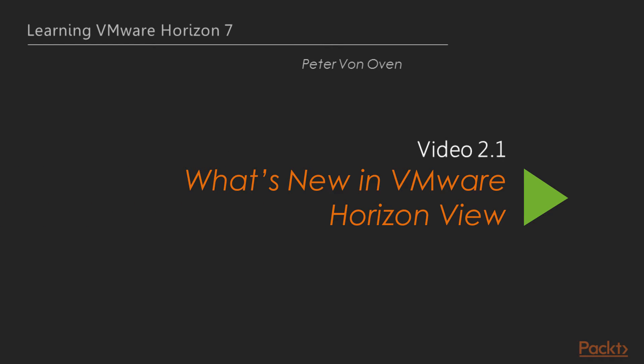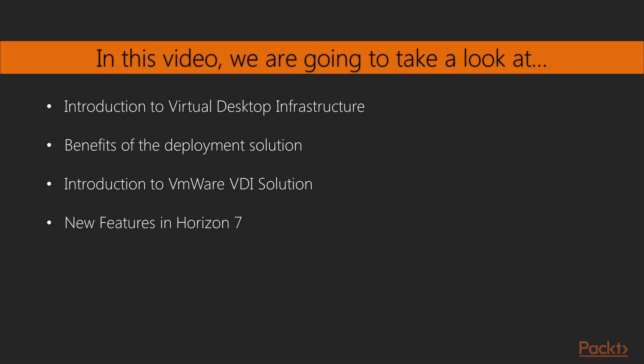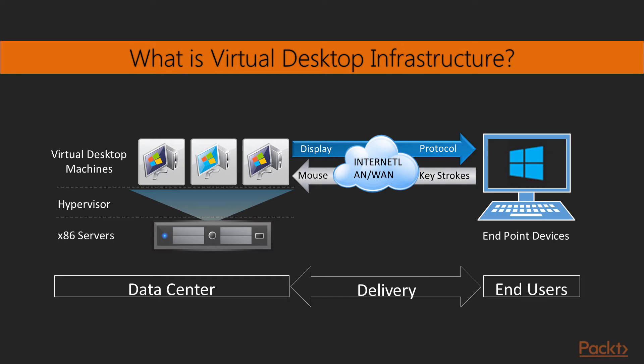So let's get started with the first video of this section. In this video, we're going to introduce you to Virtual Desktop Infrastructure, how it works, and some of the benefits of deploying the solution. We will then introduce you to the VMware VDI solution, starting with a brief history of the VMware journey up to where we are today, and the new features in Horizon 7. When we talk about Virtual Desktop Infrastructure, or VDI as it's more commonly referred to, we are typically describing a solution whereby the desktop operating system is hosted as a virtual machine running on a hypervisor, which is hosted on a server that is part of the data center infrastructure. This type of desktop virtualization is also sometimes referred to as a hosted virtual desktop, or HVD.